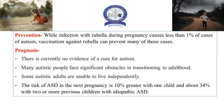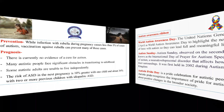Regarding prevention: infection with rubella during pregnancy causes less than 1% of cases of autism, so it is advised to take the rubella vaccine to avoid this risk. For prognosis: there is currently no evidence of a cure for autism. Many autistic people face significant obstacles in transitioning to adulthood, and some are unable to live independently. The risk of autism in a next pregnancy is 10% if there is one affected child, and about 34% with two or more previously affected children with idiopathic ASD, so the risk increases with subsequent pregnancies.